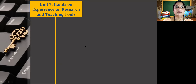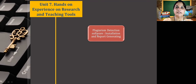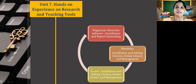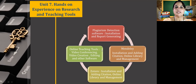Unit 7 will be on hands-on experience on research and teaching tools. This unit covers plagiarism detection software — how to install it and generate reports. Next is Mendeley — its installation, how to add bibliography, citations or references, how to create an online library and manage it. Then Zotero — its installation, how to add citations, online library, and citation management. We are also covering online teaching tools like video conferencing tools, how to create videos, editing, and other related software.